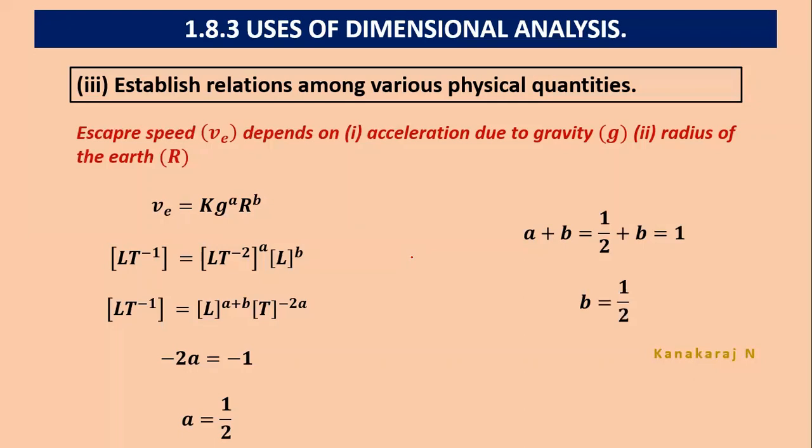We go back to the original equation VE. We get VE equals K times root of GR. The value of K can be found only by experiment. That is equal to root 2. Escape speed will be equal to root 2 GR is the final equation. Thank you.